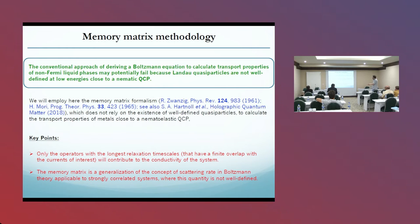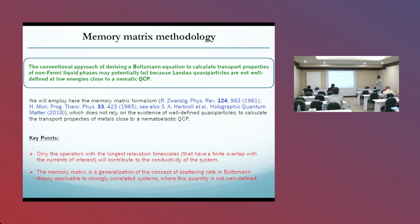Some key points: only the operators with the longest relaxation time scales that have a finite overlap with the currents will contribute to the conductivity of the system. The memory matrix is a generalization of the concept of scattering rate in Boltzmann theory, but it is applicable to a strongly correlated system where this quantity is not well-defined. Another advantage is that in this transport theory we can take into account, on equal footing, both the fermions and the bosons.